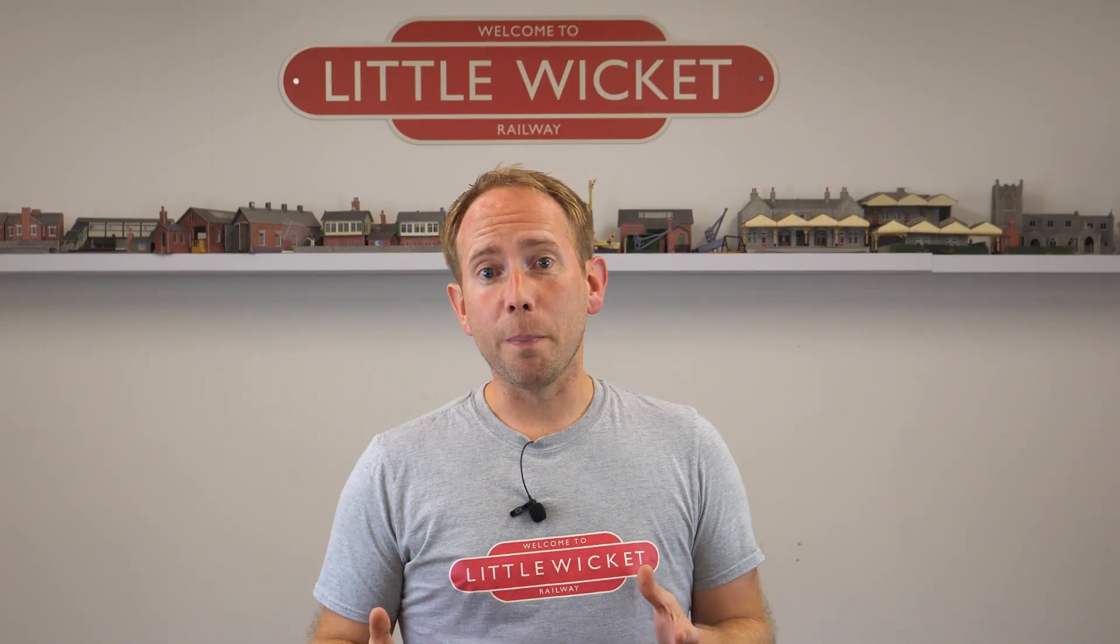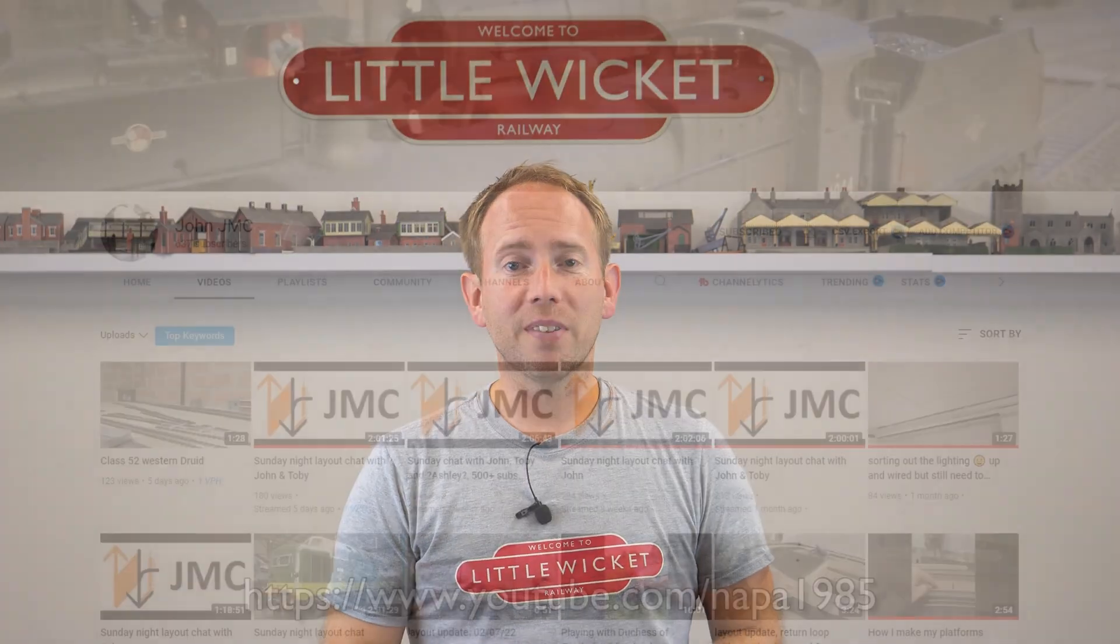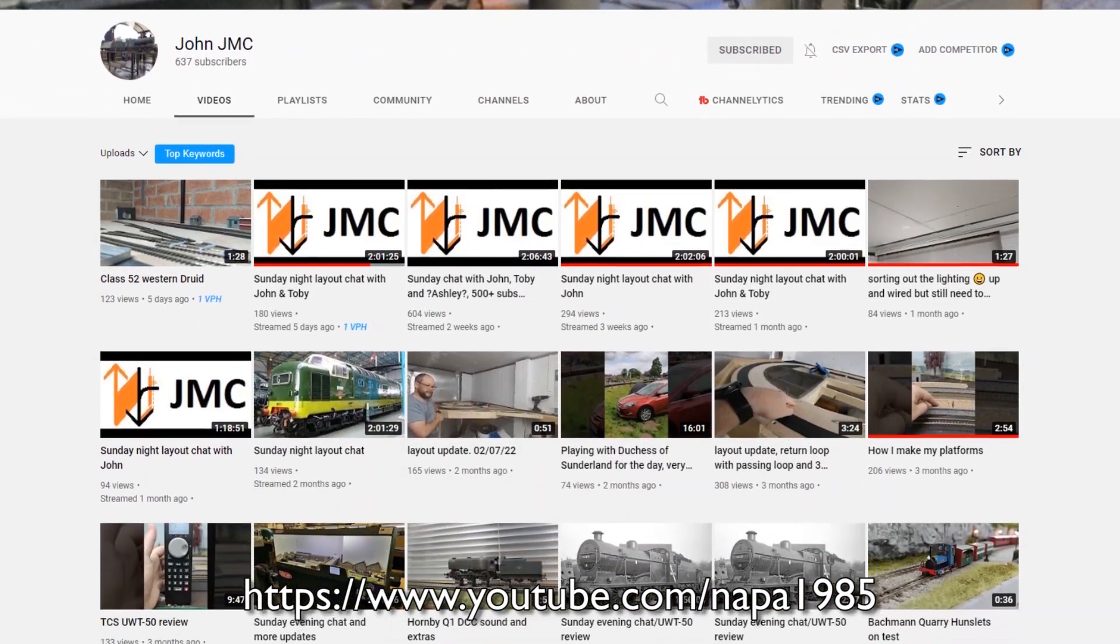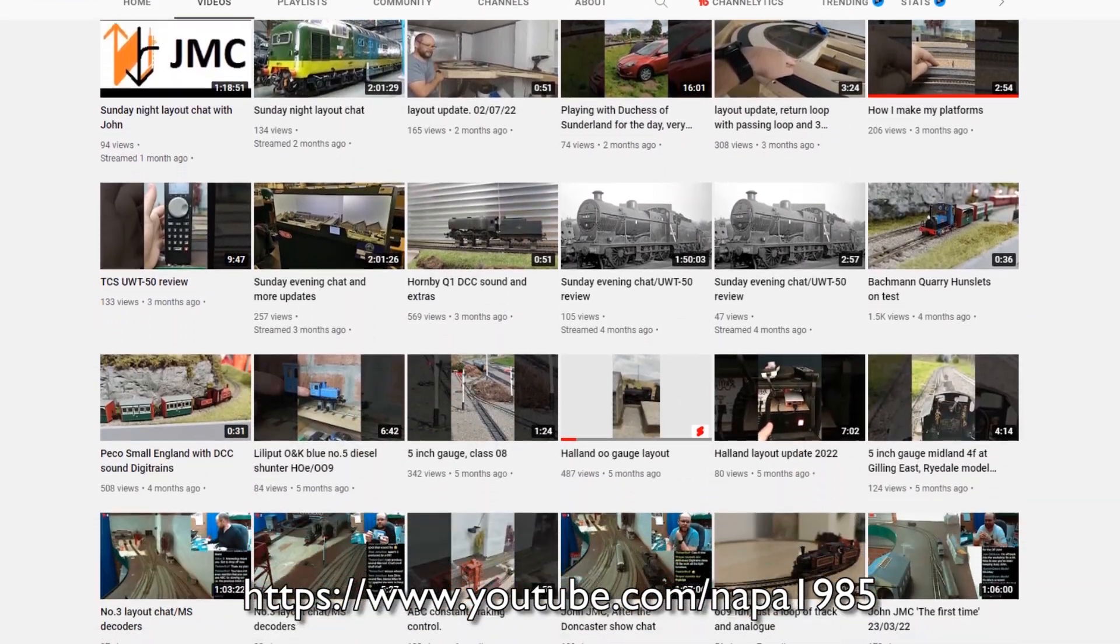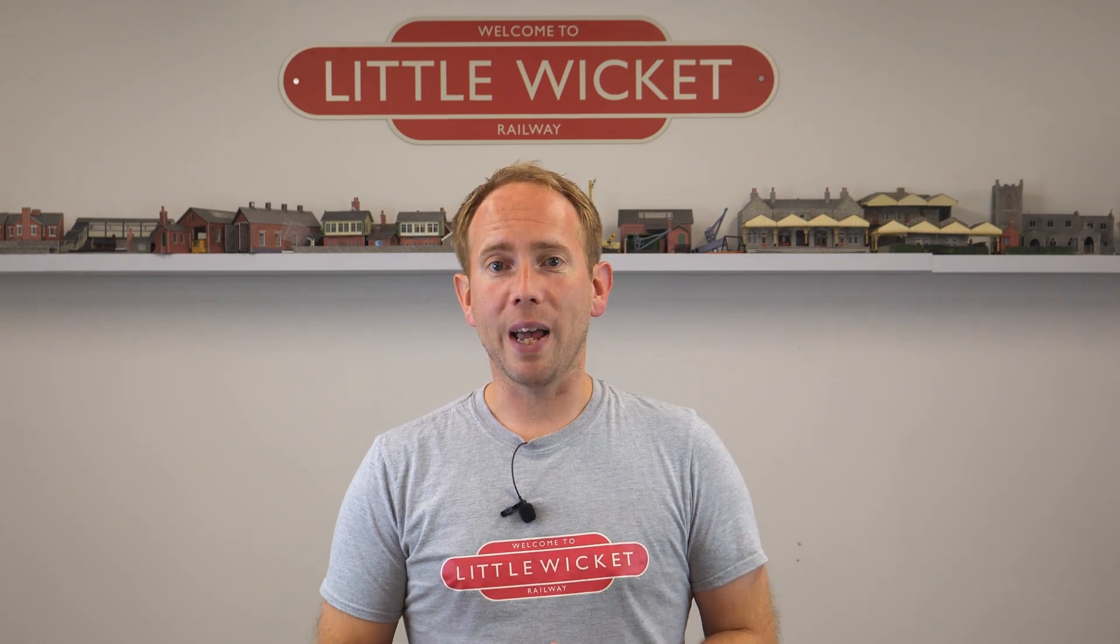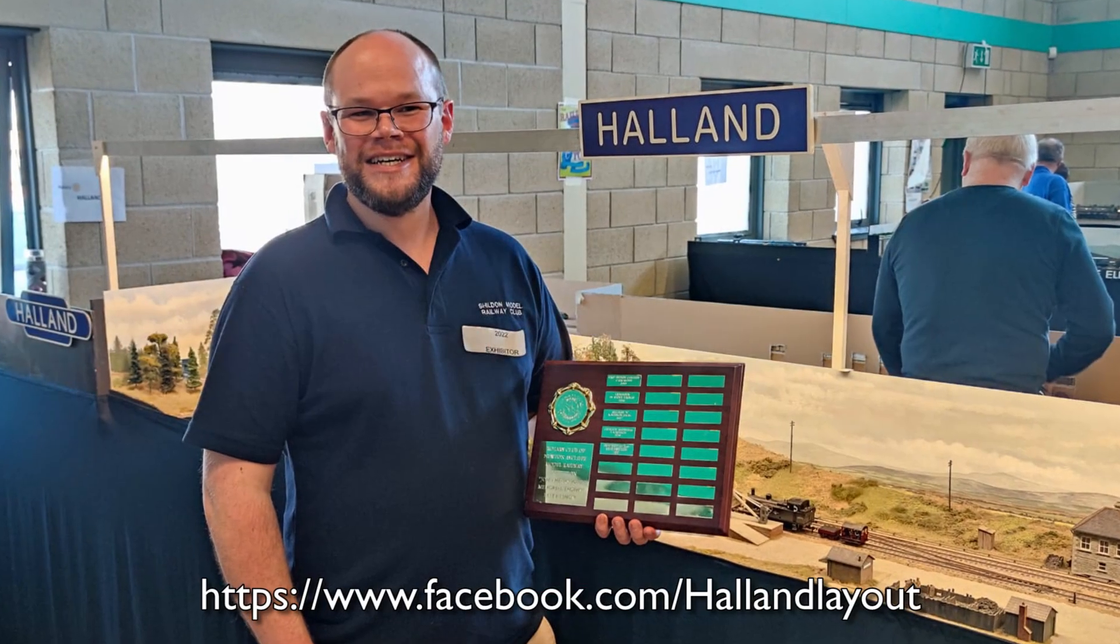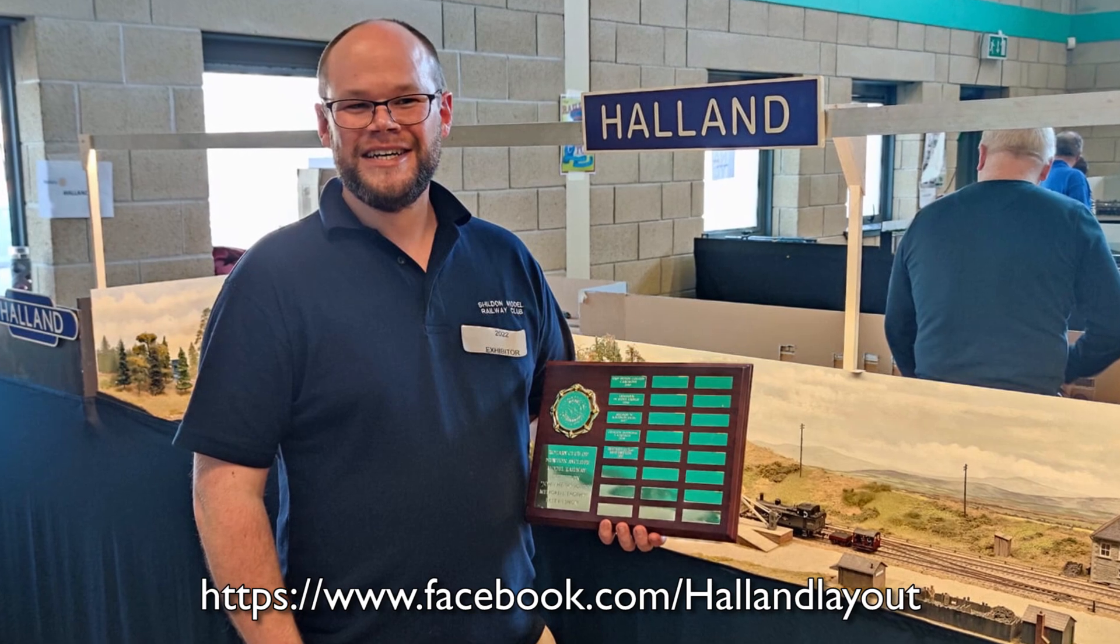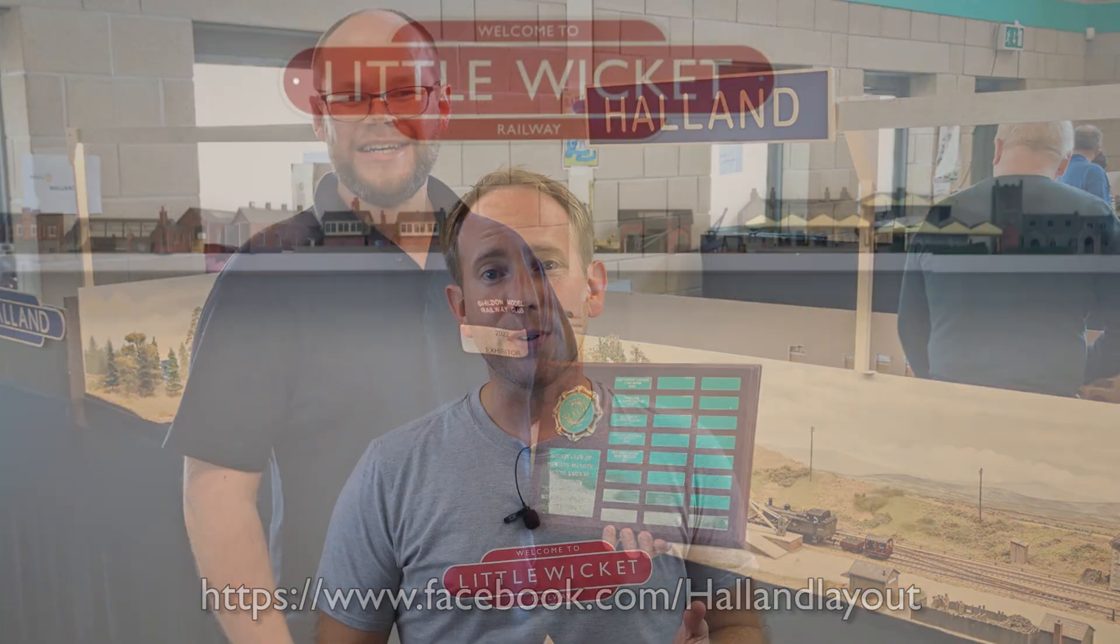When I was at the Statfold Barn model railway event, John JMC, you might be familiar with his YouTube channel or his work at DigiTrains, was showing me his exhibition layout called Halland where all the point motors are controlled by servos. I asked him what mounts he used and he showed me his solution, a really simple and effective DIY method using a length of U-shaped aluminium. So with John's permission I'm going to have a go at creating one myself and share the process with you.